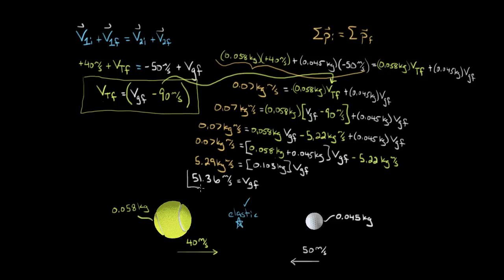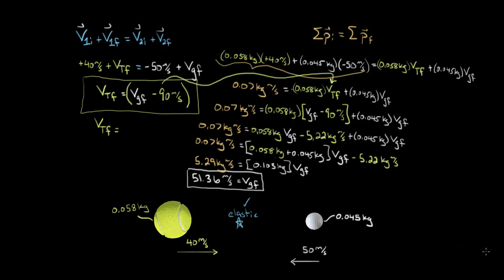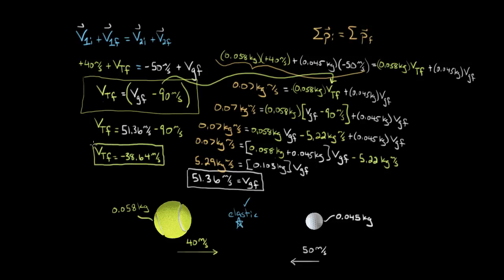We found the final velocity of the golf ball, but what about the final velocity of the tennis ball? Now that we know vg final, we just plug it back into our earlier expression. The final velocity of the tennis ball equals 51.36 minus 90, which gives negative 38.64 meters per second. It came out negative, meaning the tennis ball was deflected backwards, heading leftward at 38.64 meters per second after the collision.